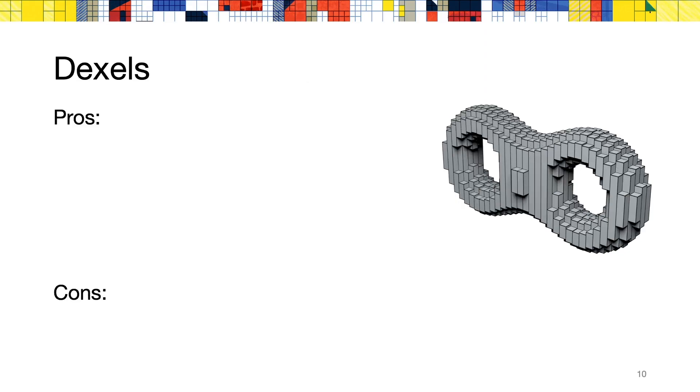There are several advantages to using dexels in the context of 3D printing. First, this is a compact representation of the input shape, so it scales well to high resolutions. Second, you get a higher precision on the Z axis, or in the direction on which you throw the rays, as opposed to a 0-1 voxel grid.